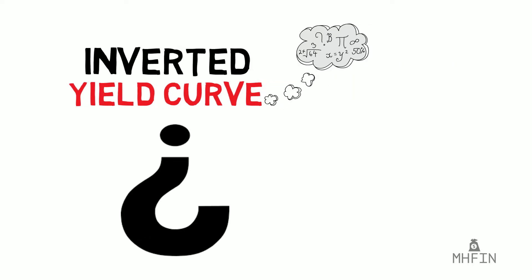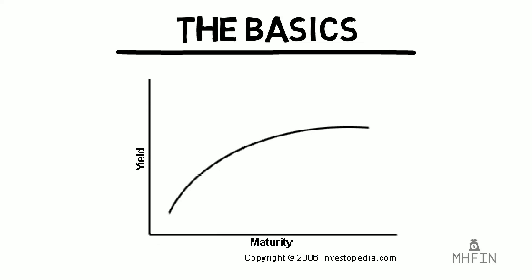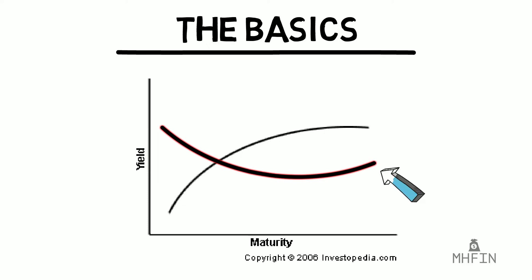Let's start with some basics. An inverted yield curve is an interest rate environment in which long-term debt instruments have a lower yield than short-term debt instruments of the same credit quality. Now that may sound confusing and boring, so let me show you this example and go over some simple concepts. At its root, a yield curve is simply a line that plots interest rates at a set point in time with an equal credit quality.